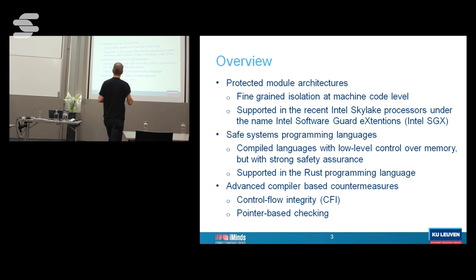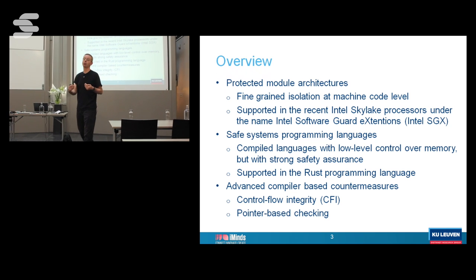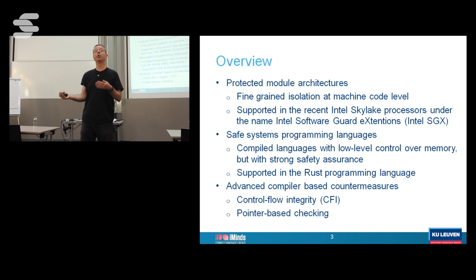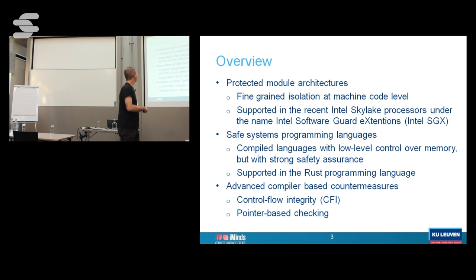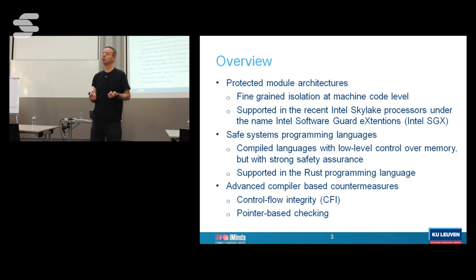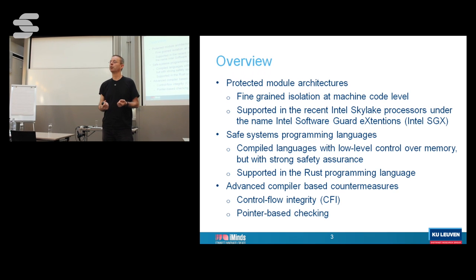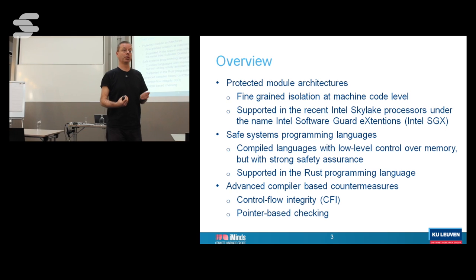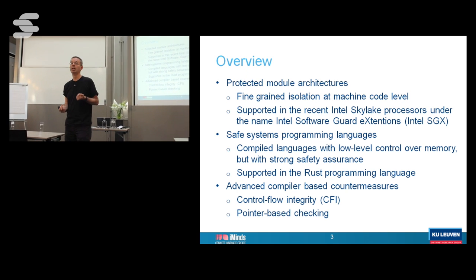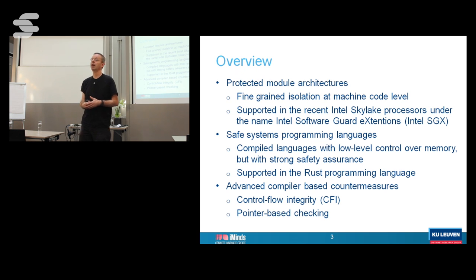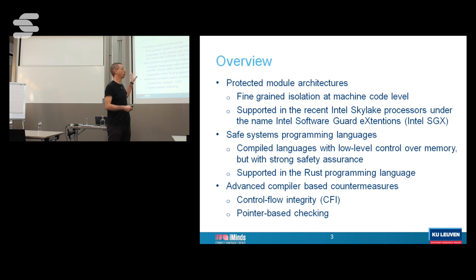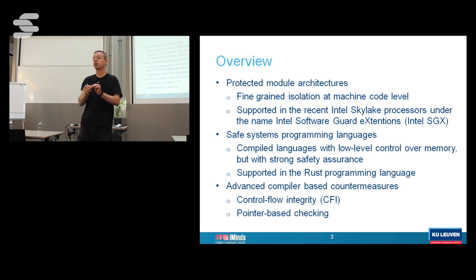More than a decade of research has been trying to come up with ways of making languages safe without using garbage collection — maintaining all the benefits of C but getting rid of memory unsafety. I think there is a breakthrough here, witnessed by the Rust programming language. About half the room has heard of Rust. It's a language developed by Mozilla; it's much more C-like than Java or Scala, but it has memory safety guarantees comparable to Java or Scala.